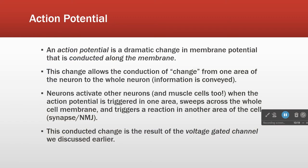So the whole point of the last day and a half of talking was to get us to the action potential. Essentially, it's a change in membrane potential that is propagated from one part of the cell to another. Typically we're talking about neurons, and the area we're looking at is the axon. The axon transmits the action potential from the beginning all the way to the end.